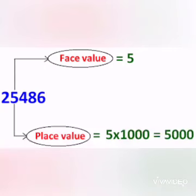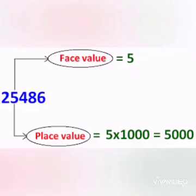Now we will discuss face value and place value. Face value is the value of a digit by itself. For example, in the number 25,486, the face value of digit five is five. The place value is the product of the place and the face value. For digit five, the face value is five and five is at the thousands place, so the place value is five thousand.